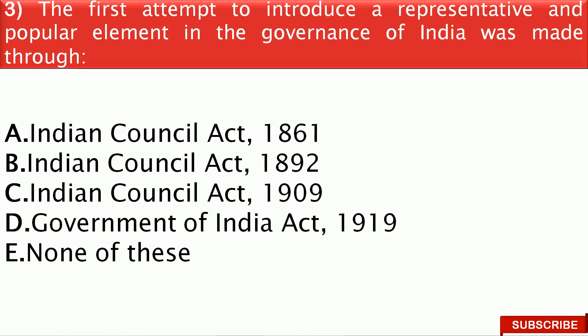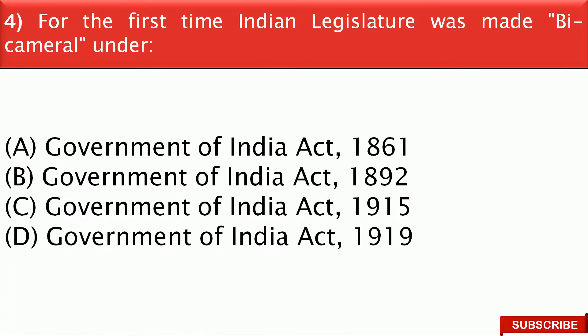Next question: The first attempt to introduce a representative and popular element in the governance of India was made through — the right answer is option A, that is the Indian Councils Act 1861. Next question: For the first time the Indian legislature was made bicameral under the — the right answer is option D, that is the Government of India Act 1919.